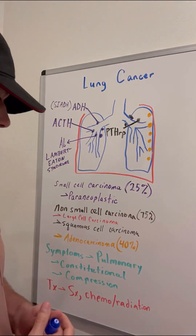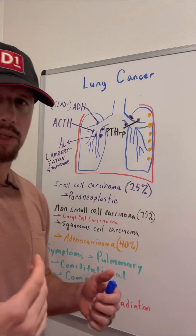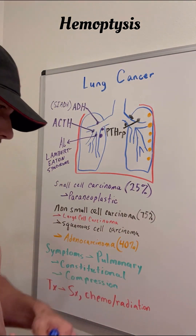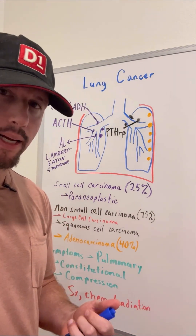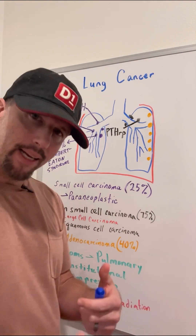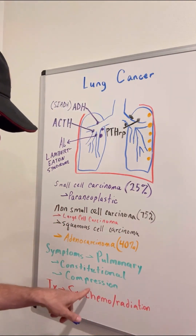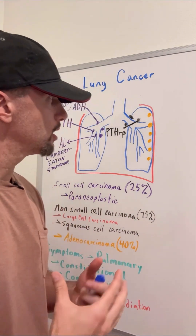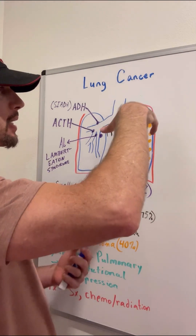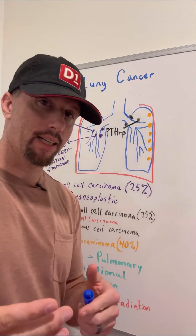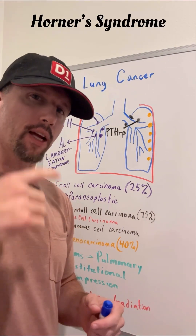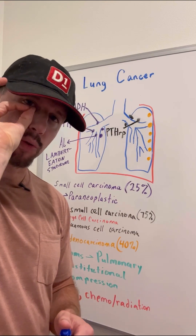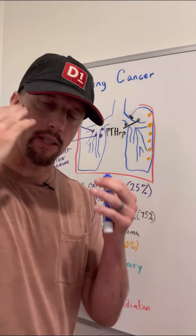Symptoms of lung cancer include pulmonary symptoms like a persistent cough and hemoptysis, where you cough up blood. There are also constitutional symptoms such as unexplained weight loss, night sweats, fever, fatigue, and malaise. Another key category is compression: depending on where the tumor is, it may compress nearby structures. It could compress the recurrent laryngeal nerve and cause hoarseness, or a Pancoast tumor could compress the superior cervical ganglion, leading to Horner's syndrome — with ptosis of the eyelid, miosis of the pupil, and anhidrosis where the face doesn't sweat.